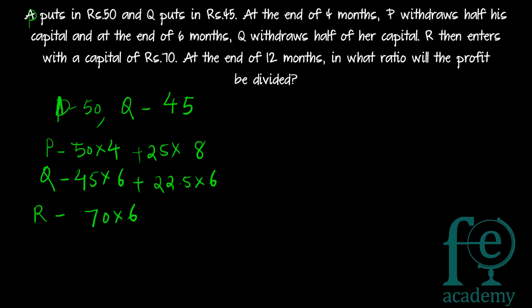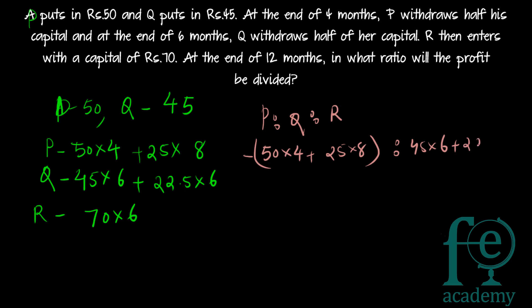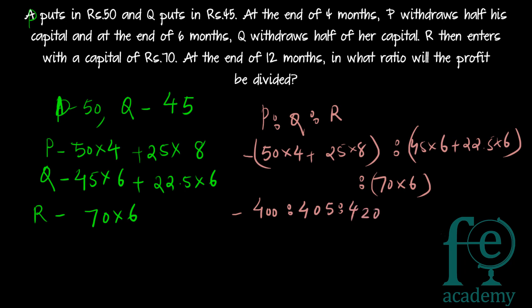Now find the ratio P to Q to R. It will be (fifty into four plus twenty-five into eight) to (forty-five into six plus twenty-two point five into six) to (seventy into six). This simplifies to four hundred is to four hundred five is to four hundred twenty, and upon further simplification, the final ratio is eighty is to eighty-one is to eighty-four. This is the ratio in which the profit will be divided — eighty parts for P, eighty-one parts for Q and eighty-four parts for R. Thank you for watching.